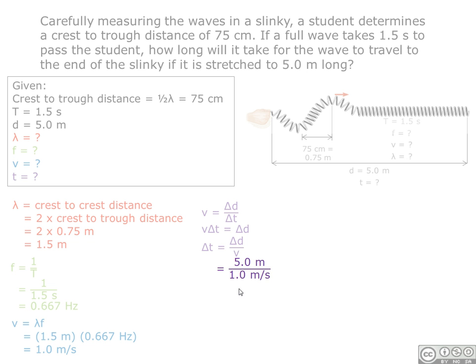We input our distance and speed values, and we get the final answer of 5.0 seconds rounded to the correct number of sig figs. It will take 5.0 seconds for the wave to travel to the end of the slinky.